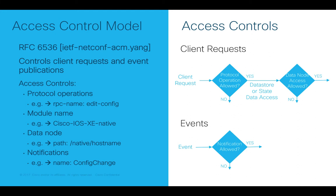The third rule type is data node. If you want to access any leaf or container in your data model, you can specifically create a rule for that path. This allows more precise rules — for example, if you want only privilege level 5 users to update the hostname on your device, you create a rule for that path. Any user at privilege level 5 can update the hostname, but if they try to update a VRF or configure an IP address they will get denied. The fourth type is notification — you can set rules for the notification name to permit or deny a user from receiving specific notifications.